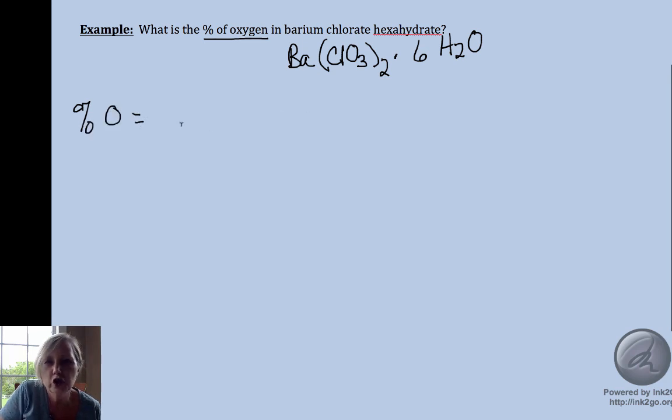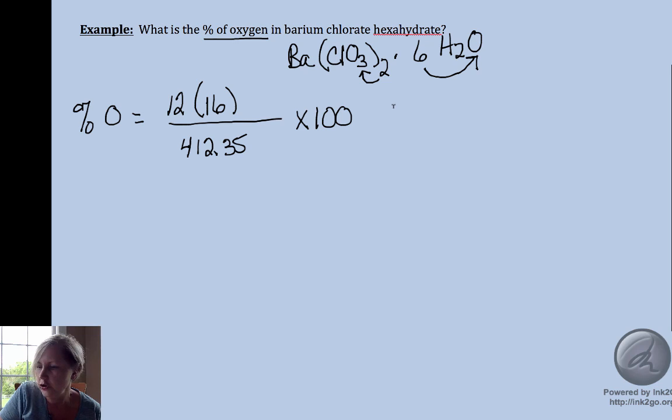So if we were to do this whole molar mass, we'd come up with a whopping 412.35 grams per mole. And when we did that, we had six oxygens here and six oxygens there, so oxygen would have contributed 12 times 16 times 100 gives me 46.56%.